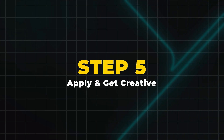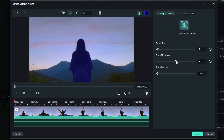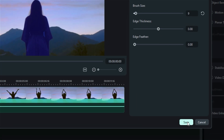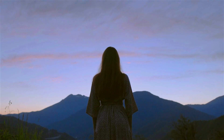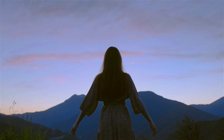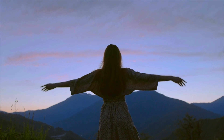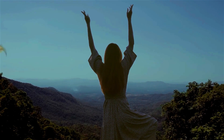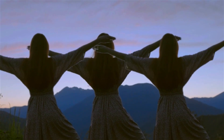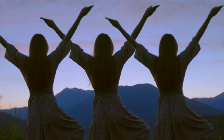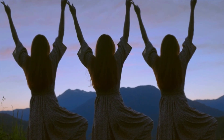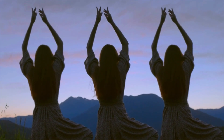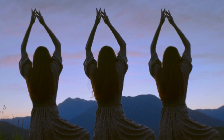Step 5: Apply and get creative with AI Smart Cutout. Then hit the Save button. Now the fun part — add a new background, layer the subject over another clip, or create cool effects like clones or cinematic composites. The possibilities are endless.